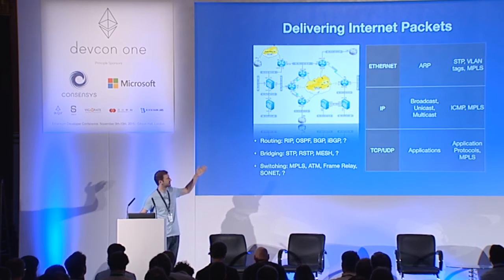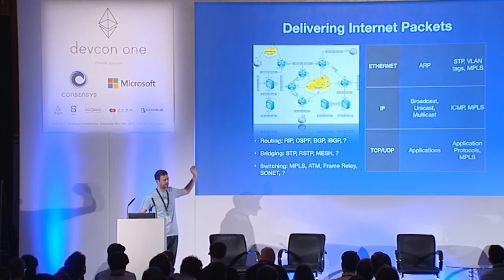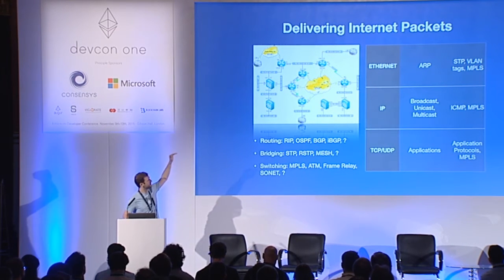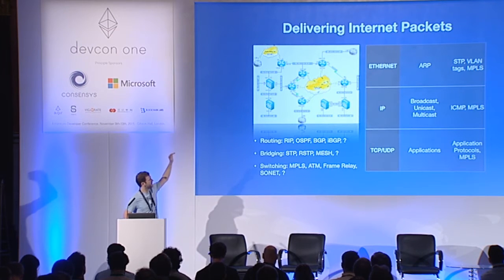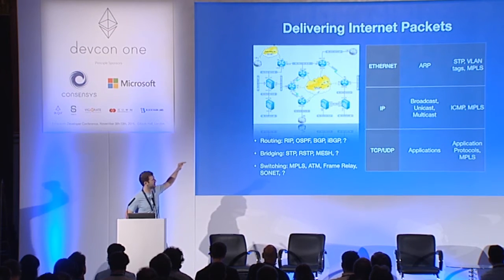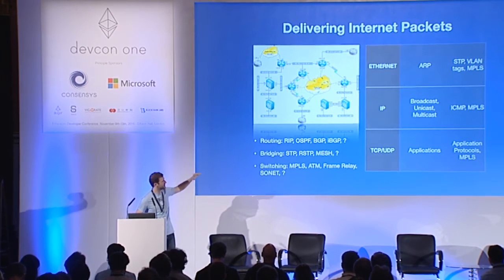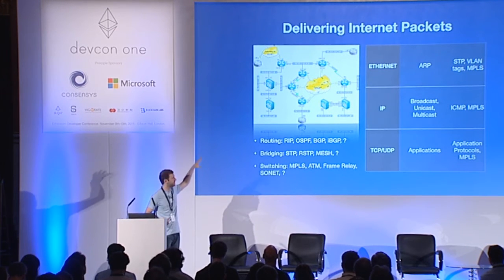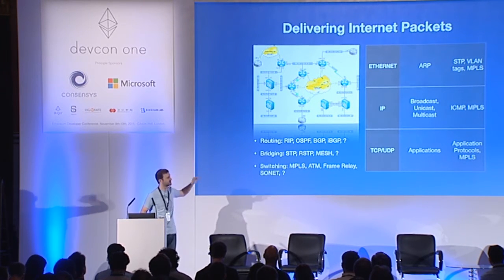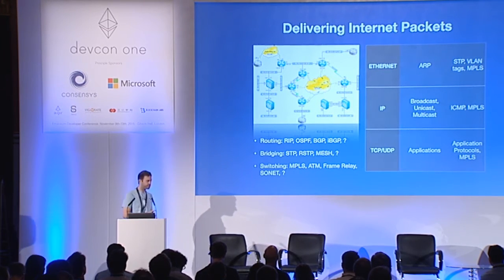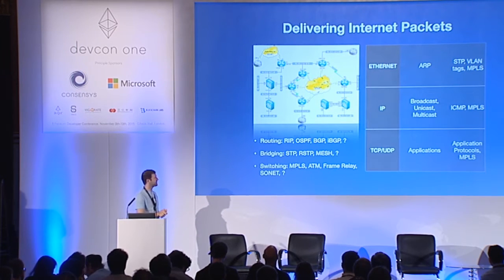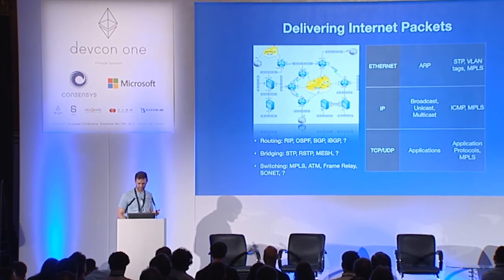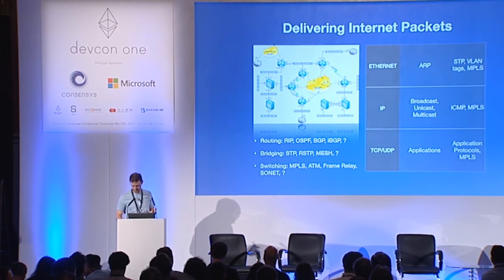IP, of course, runs on top of ethernet. So this is kind of layered — we have physical, then addressability, then application. It's a generalized stack of layers. And Ethereum is built on a network stack that is very similar to this.